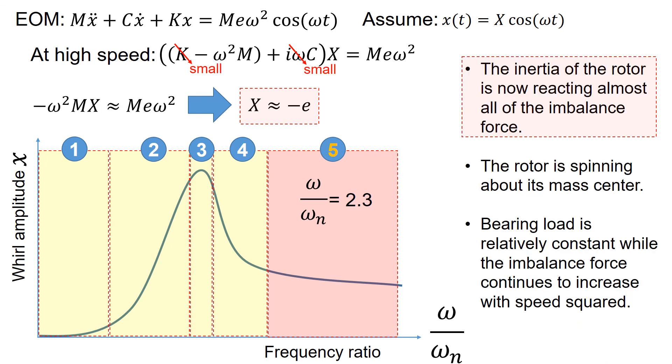At this condition, the inertia of the rotor is now reacting almost all of the imbalance force. As discussed, the rotor is spinning about its mass center. And the bearing load is relatively constant while the imbalance force continues to increase with speed squared.